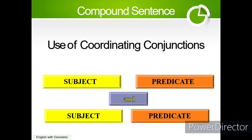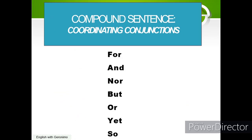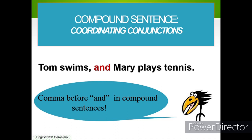In a compound sentence there are two subjects and two predicates: subject-predicate and subject-predicate. For example: 'Tom swims and Mary plays tennis.' We have two independent clauses. To memorize coordinating conjunctions more easily, just remember the word FANBOYS. So: 'Tom swims and Mary plays tennis' — note the comma before 'and' in compound sentences.